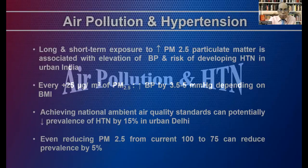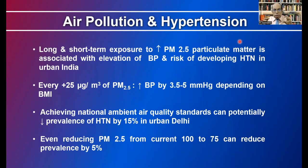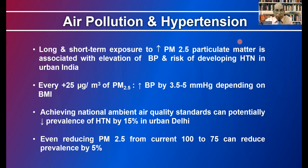Air pollution and hypertension: long and short-term exposure to increased PM2.5 particulate matter is associated with elevation of blood pressure and risk of developing hypertension. Every increase of 25 micrograms per cubic meter of PM2.5 increases blood pressure by 3.5 to 5 mm Hg, depending on BMI. Achieving national ambient air quality standards can potentially decrease the prevalence of hypertension by 15%, and even reducing PM2.5 from the current 100 to 75 can reduce prevalence by 5%.